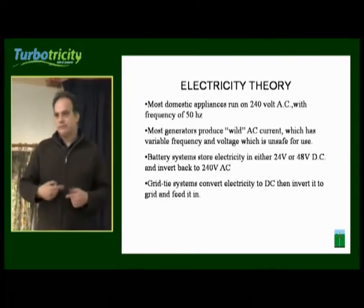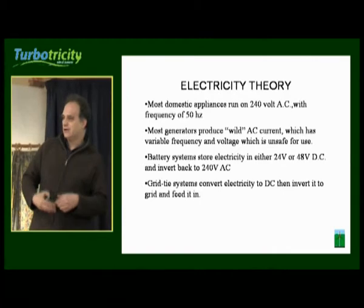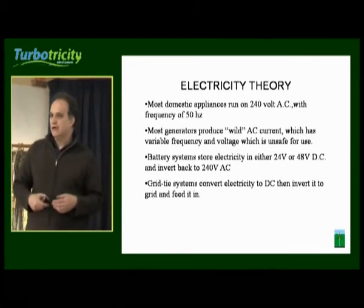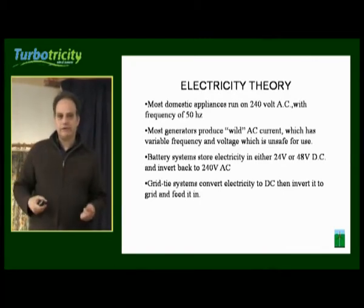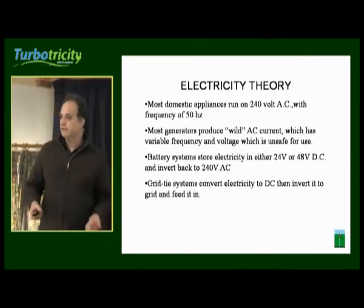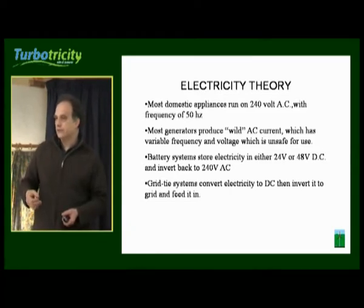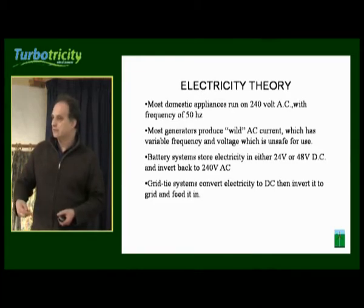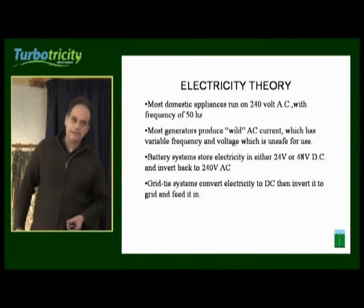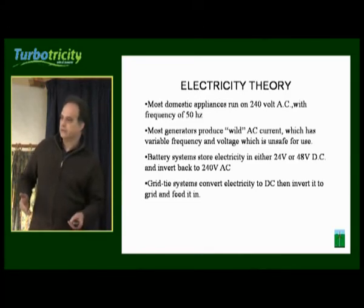Generators spinning around on top of your wind turbine are spinning at various rates, so the frequency is completely variable depending on how fast it's turning. It's also producing variable voltage depending on the speed at which it's turning and the load on it. This kind of electricity that comes off a generator is known as wild alternating current.